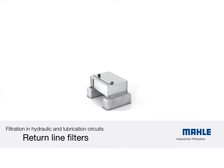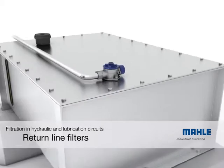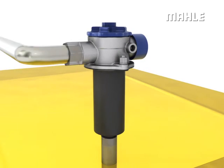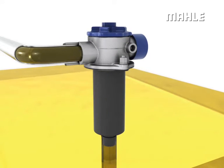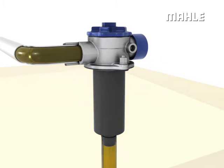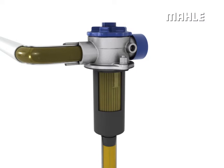Return line filters clean the oil contained in the system as it flows back into the oil tank. Tank top installation allows for a compact design. The filter element retains all the contamination created within the system and flushed out of the circuit.